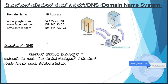Let us know how many people can access websites like Google.com, Facebook.com, Twitter.com, or other websites. These are examples of the domain name system. This is the domain name system.